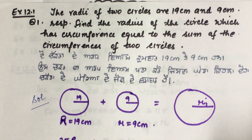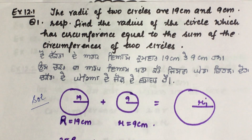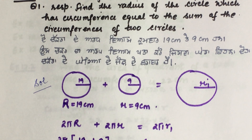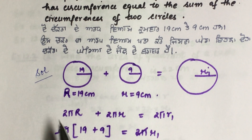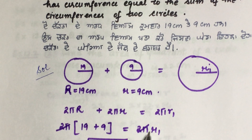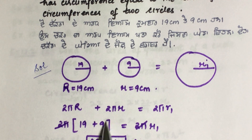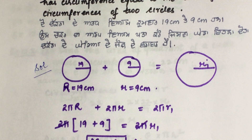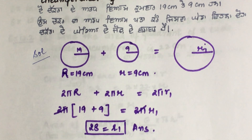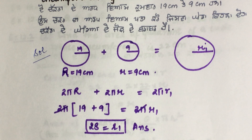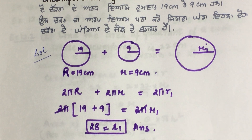Using the formula: circumference = 2πr. Let capital R be the new radius and small r the smaller. So 2π(R) = 2π(19) + 2π(9). Taking 2π common: R = 19 + 9 = 28. So the answer is R₁ = 28 cm. Clear.